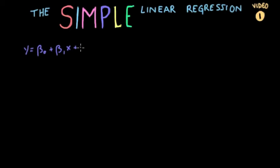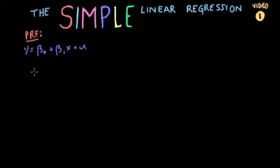We can call this our population regression function, sometimes denoted as PRF. It is our true model — what y is actually represented as in functional form. This is what we're trying to find, and we will never truly know what our population regression function is, but we try our best to find it using our sample regression.